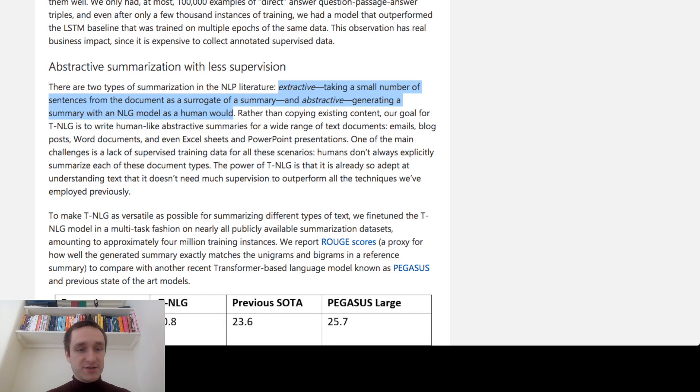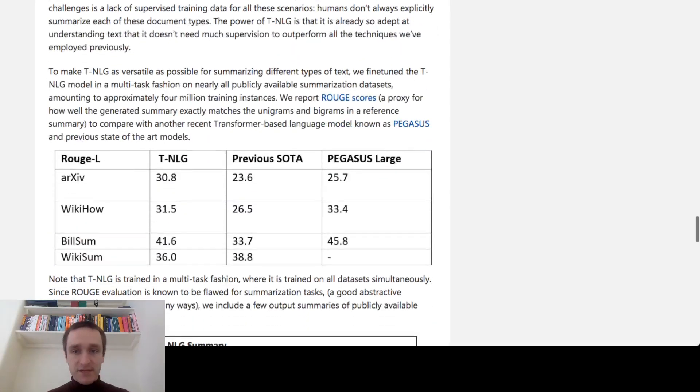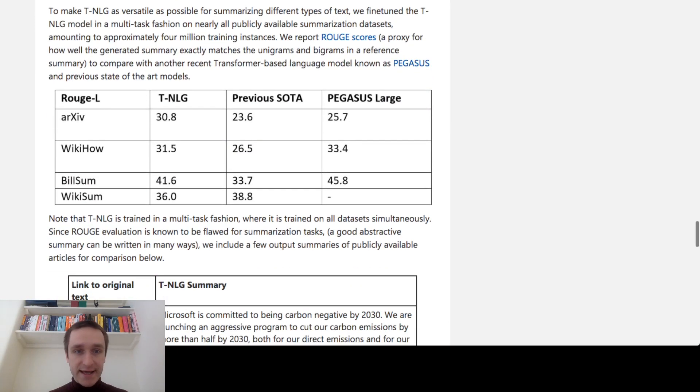Actually, the TNLG model is able to do abstractive summarization, which is really interesting. I'm right now trying to learn more about how you can use summarization. There's the previous model Pegasus, which was also a transformer-based language model.